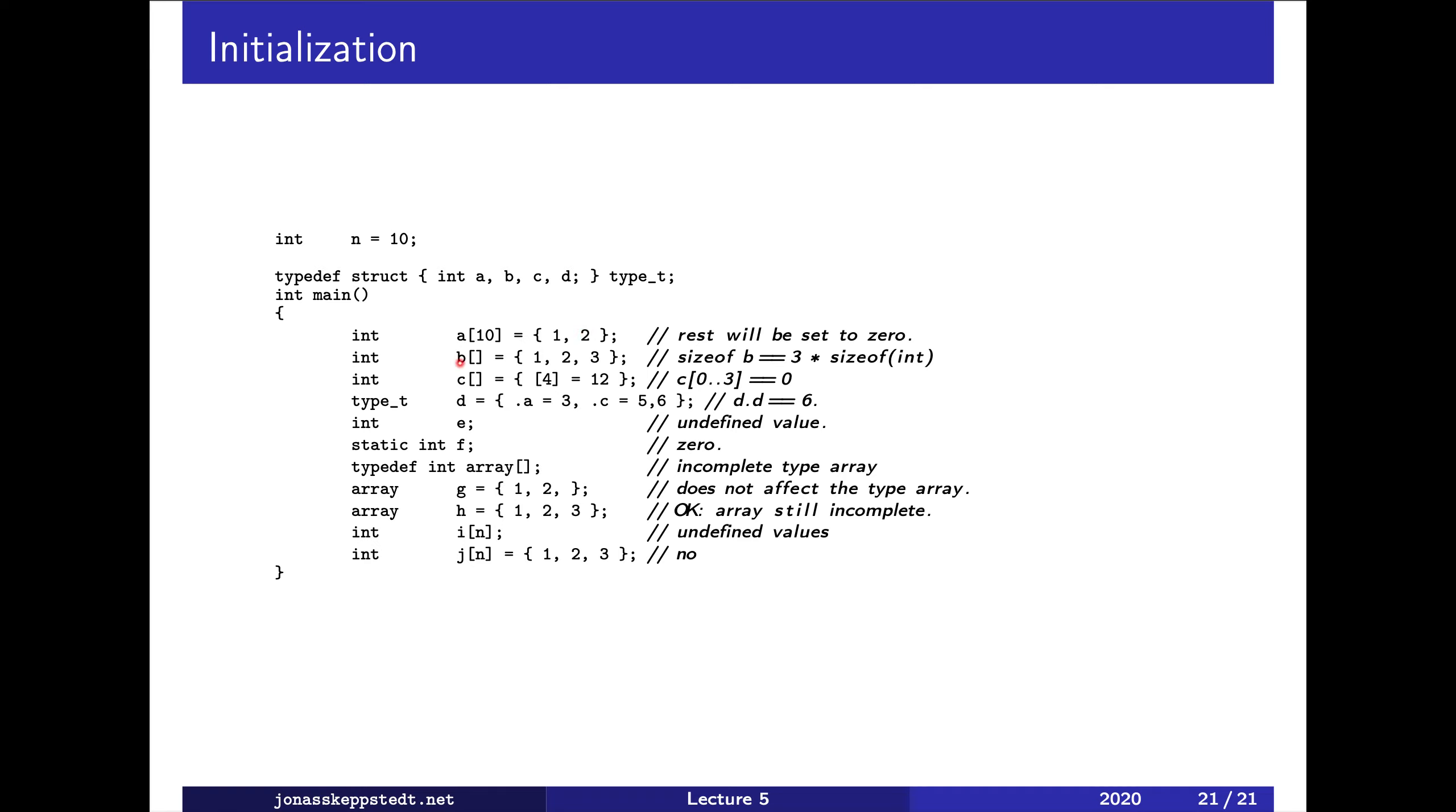The first two elements get the values one and two and the rest are set to zero. Here, we don't know the number of elements in B, but the compiler can count and it concludes that B has three elements with these values. Here, it doesn't know either, but it finds that the fourth element or the element at index four should be 12. So there are five elements in C and those which didn't get the number, a value from the initialization, get the value zero.